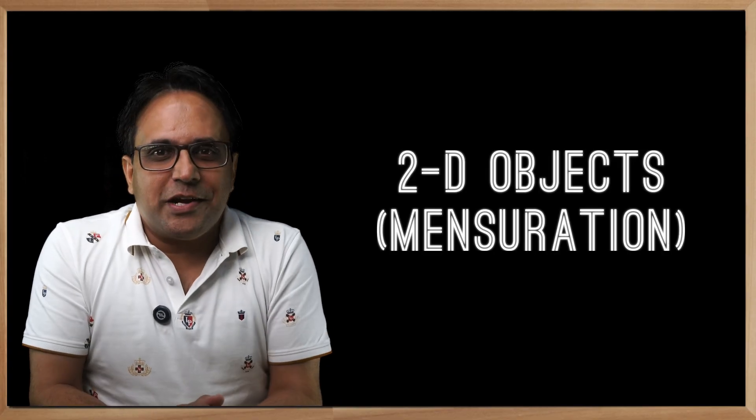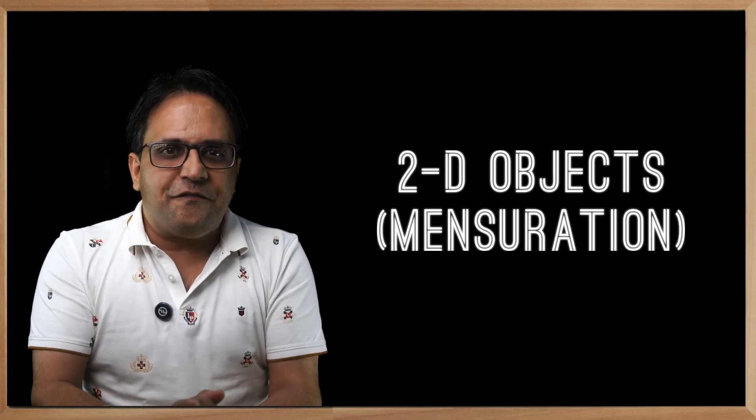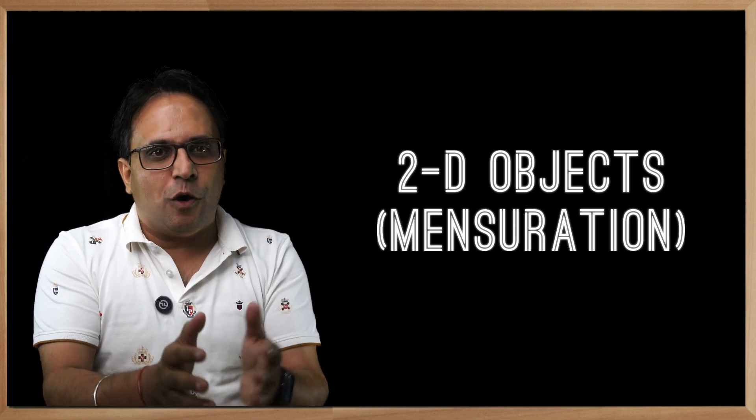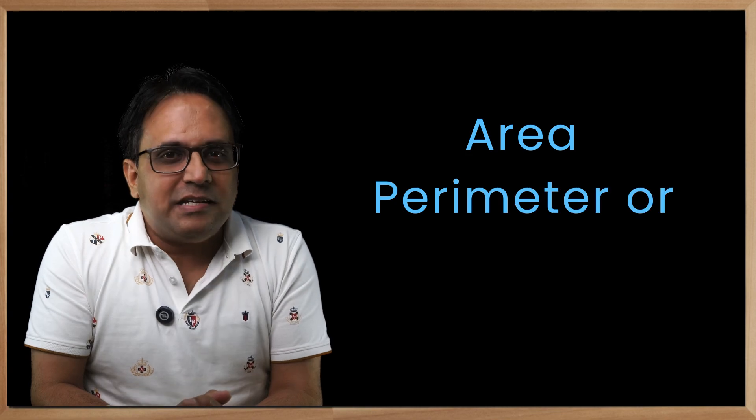From the last video on mensuration where we spoke about what mensuration is all about, if we move the discussion to 2D objects in particular, there are two major things that we look to calculate: area and the perimeter or circumference.